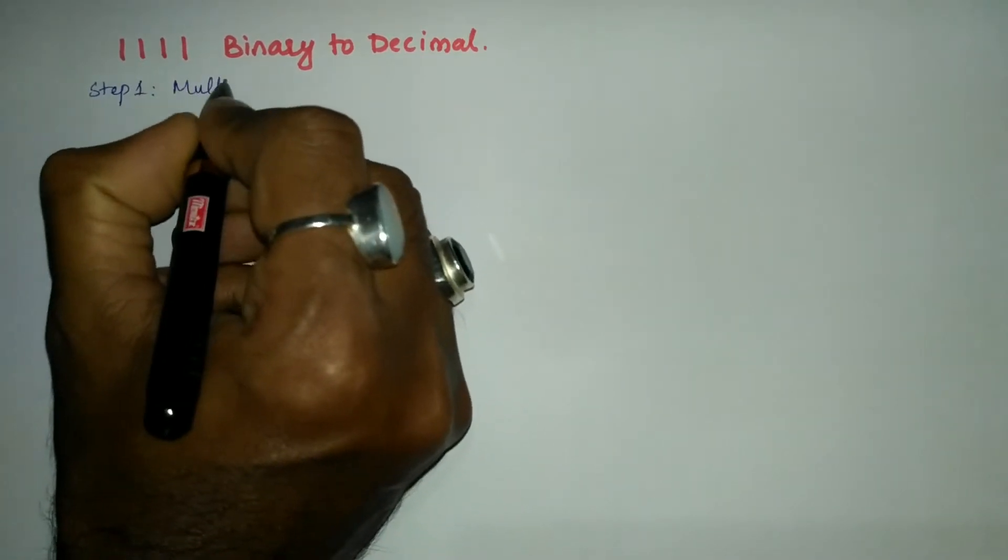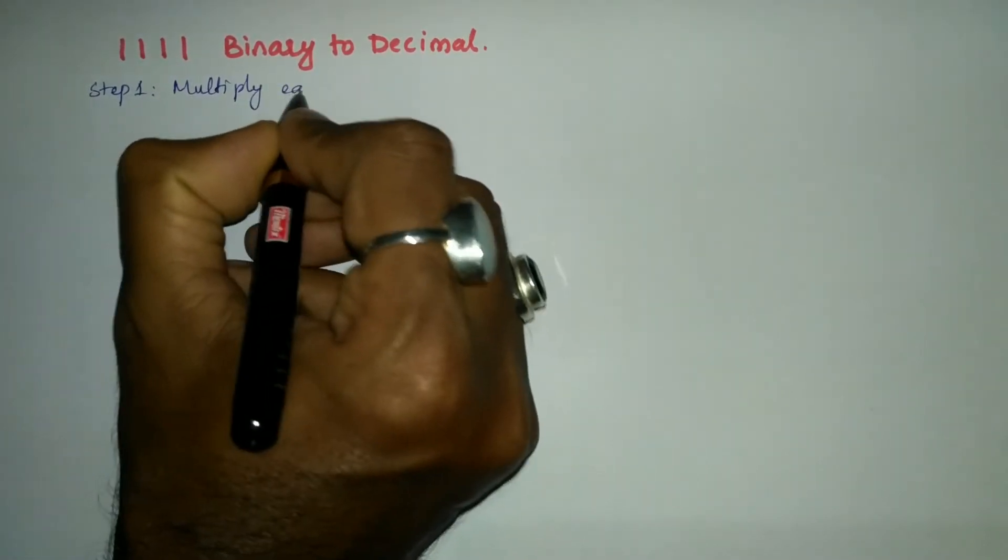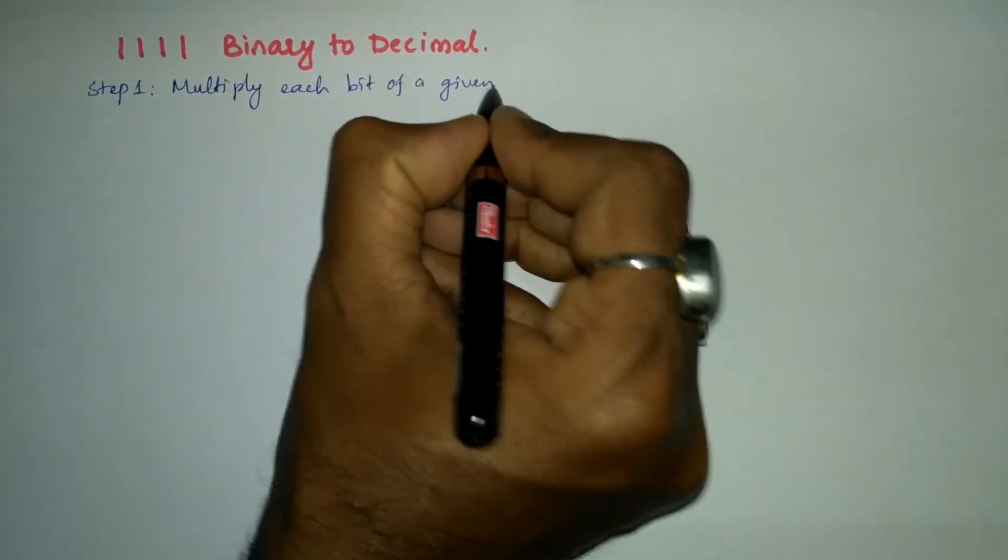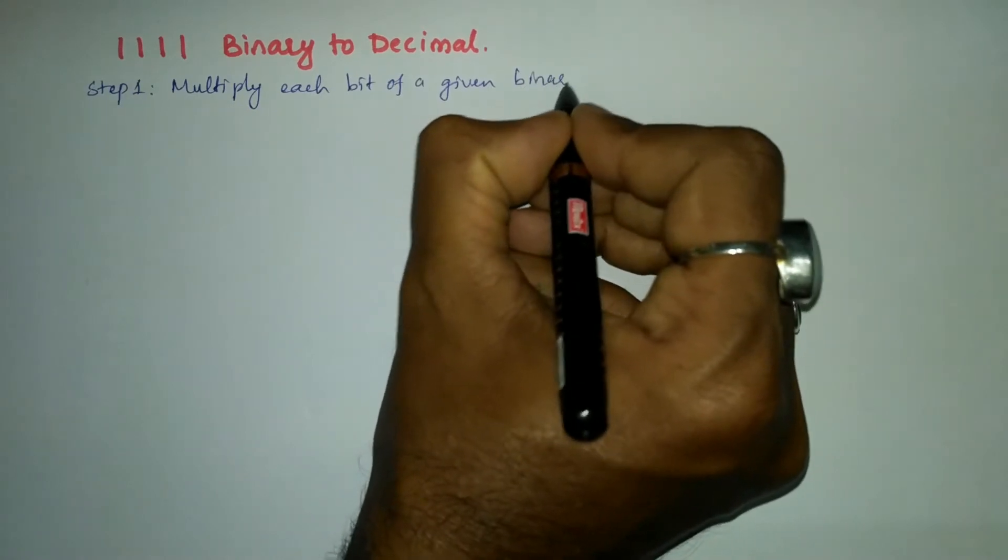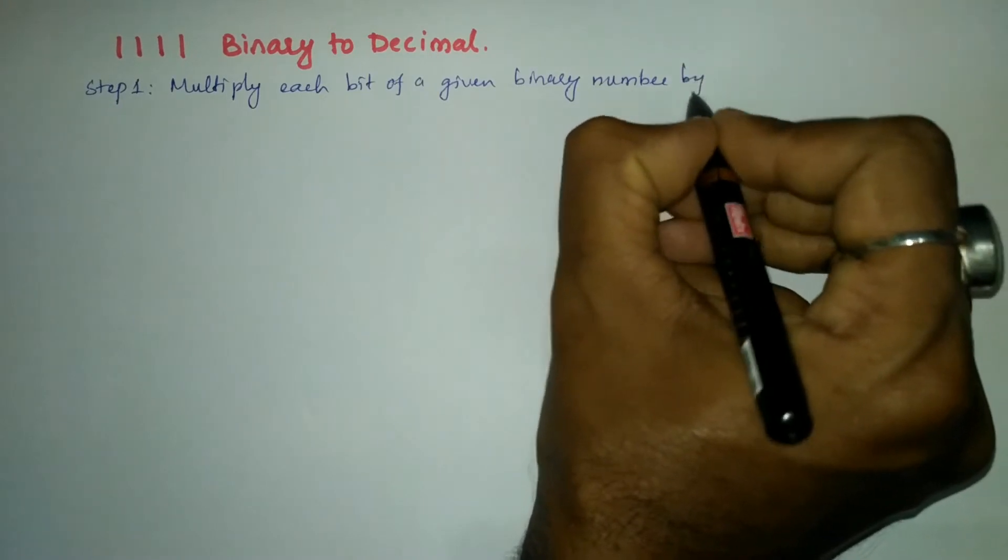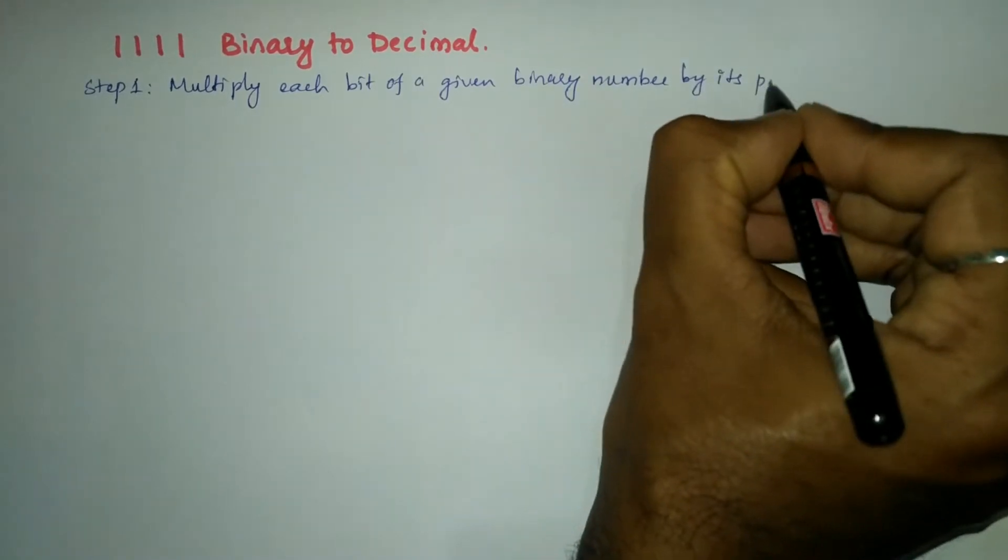So let us write step number one here. I am going to write multiply each bit of a given binary number by its positional weight.